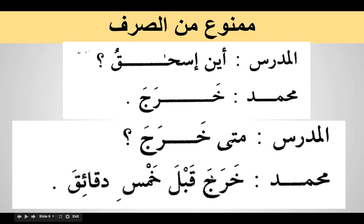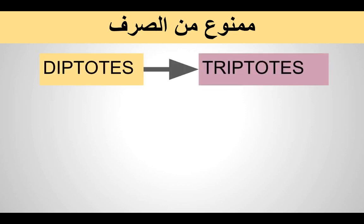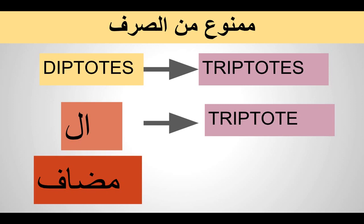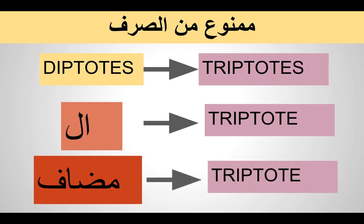This is the lesson on how to identify mamnu' min al-sarf in its mansub and majroor forms. Now we look at the exceptions for mamnu' min al-sarf: there are two conditions where a diptote can take kasra and act like a regular (triptote) noun. The first condition: when al is attached to a diptote, it ceases to be a diptote and can take kasra. The second condition: when a diptote becomes a mudaf, it can also take kasra.